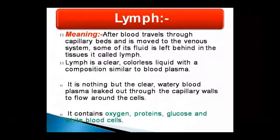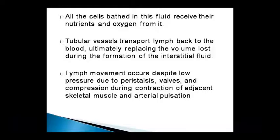Lymph contains oxygen, proteins, glucose, and white blood cells. Blood plasma leaks from the capillary wall and the cells are surrounded by it. It is a clear watery blood plasma — all cells are buried in this fluid and nutrients and oxygen are taken from it. Because these cells remain immersed in it, they take nutrients and oxygen from it.